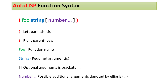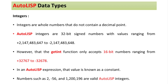The AutoLISP function syntax includes: left parenthesis, right parenthesis, the function name, required string arguments, optional arguments in square brackets, and possible additional arguments denoted by an ellipsis.